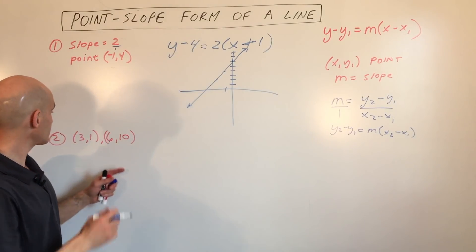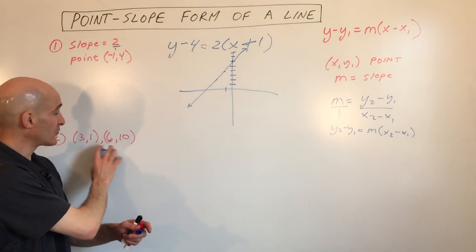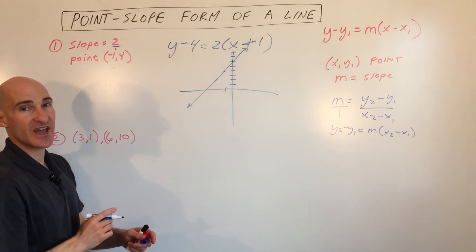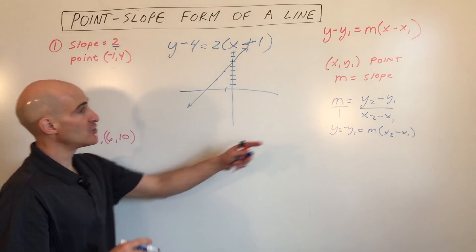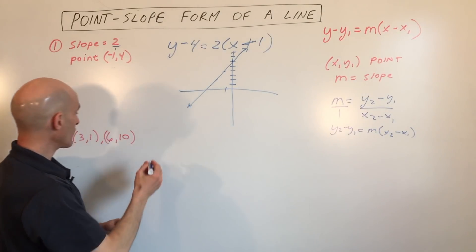Let's take a look at another example. Say we want to find the equation of a line through these two points: 3, 1, and 6, 10. So first thing we need to do is find the slope of the line by using our slope formula.